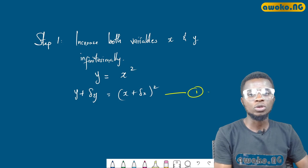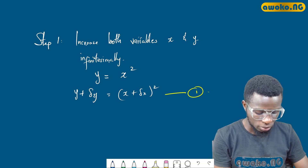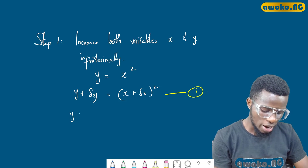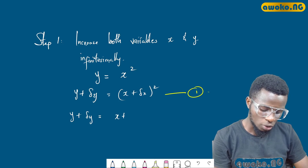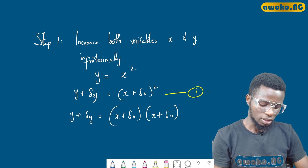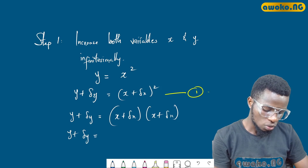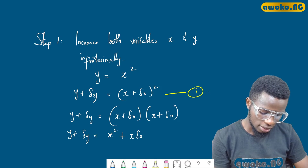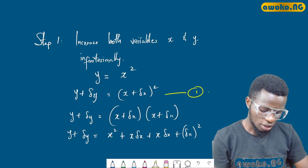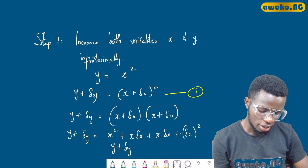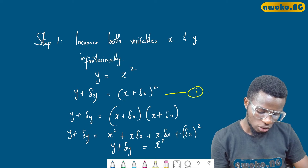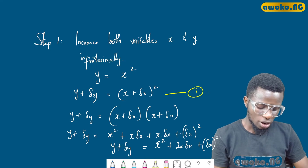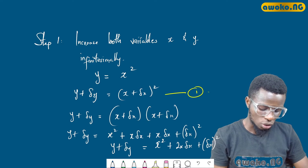Before we go to the next step, let us open this bracket. If we do that we have: y plus δy equals (x plus δx)(x plus δx). Expanding gives y plus δy equals x squared plus x·δx plus x·δx plus (δx) squared, which simplifies to y plus δy equals x squared plus 2x·δx plus (δx) squared. Let us call this equation two.